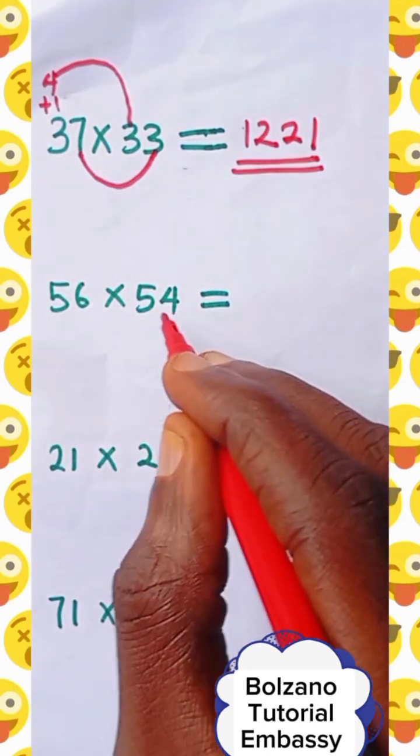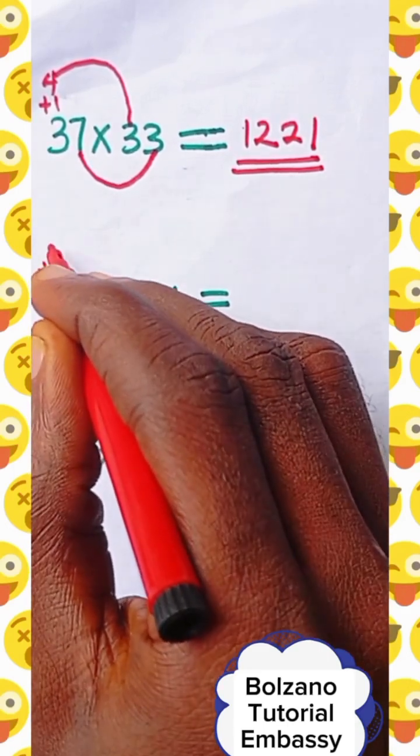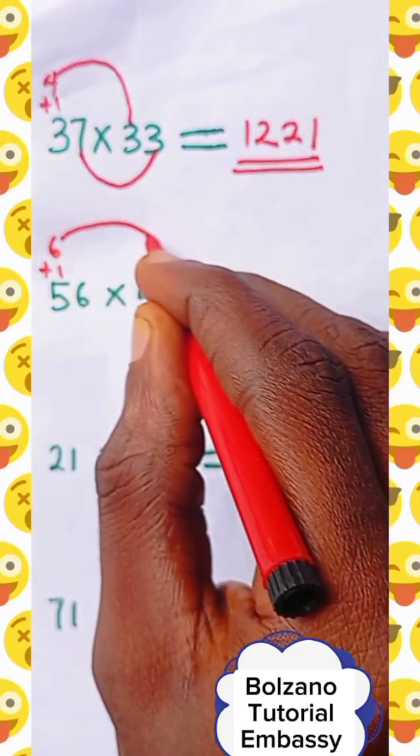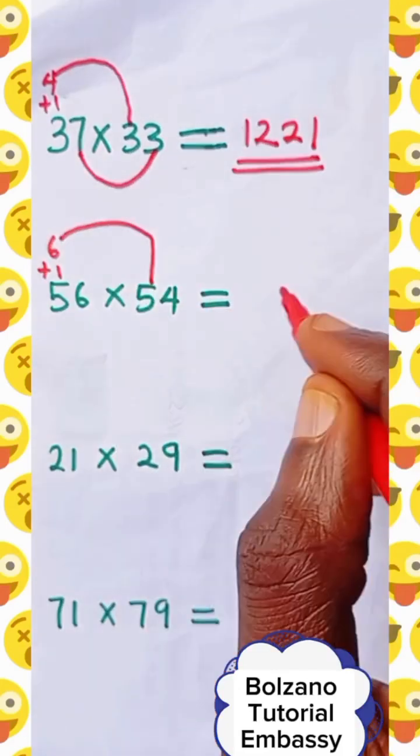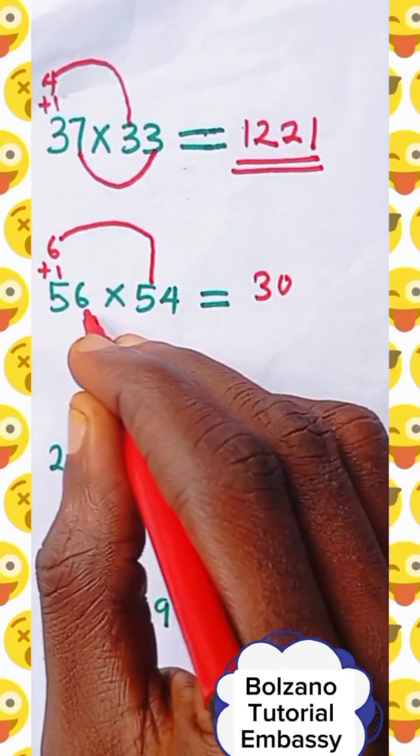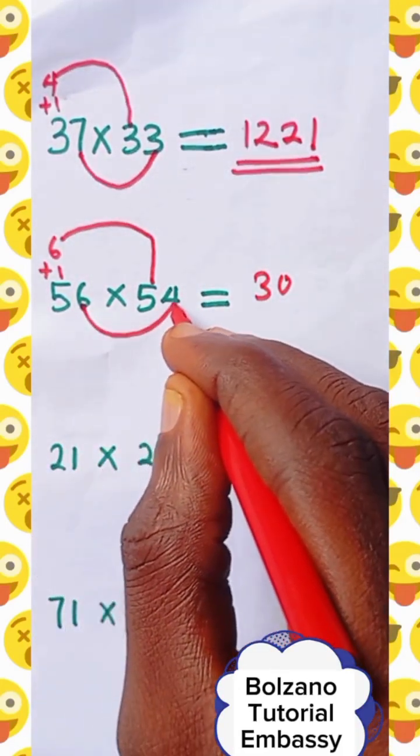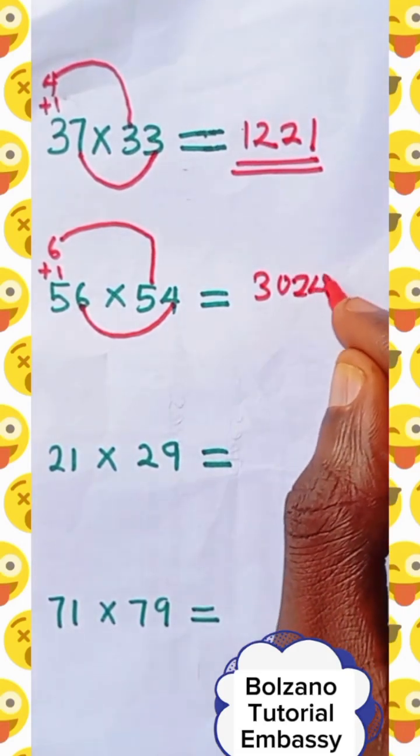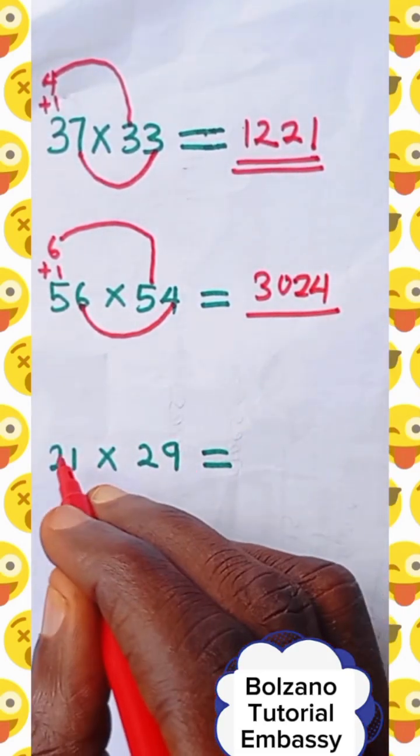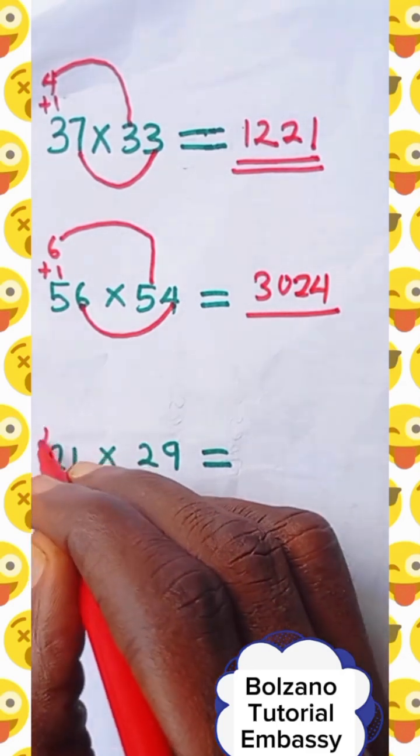56 times 54. Add 1 to 5, you have 6. 6 times 5 equals 30. Then multiply the second digit, 6 by 4, you have 24. Next, 21 times 29. Add 1 here, you have 3. 3 times 2 is 6.